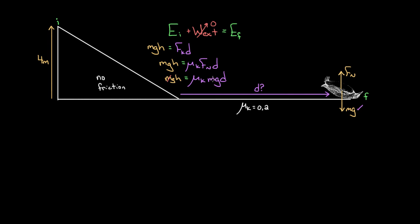So we can say MGH equals the coefficient of kinetic friction times MG times D — and again, something miraculous happens: the M's end up canceling. Walter could have been 100 kilograms or two kilograms, he would have slid the same amount. Finally, I can solve this for D. D is going to equal GH divided by μK times G — and it turns out the G's cancel too. Could have done this on the moon and Walter would still slide the same amount. So I just get that D equals H divided by the coefficient of kinetic friction. H was four meters, and then I divide by the coefficient of friction, which was 0.2 — and I get that Walter is going to slide 20 meters before coming to a stop.